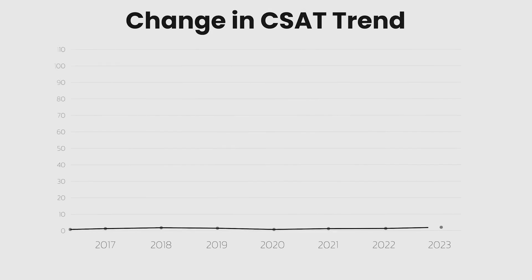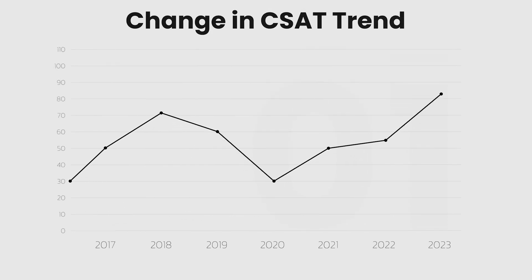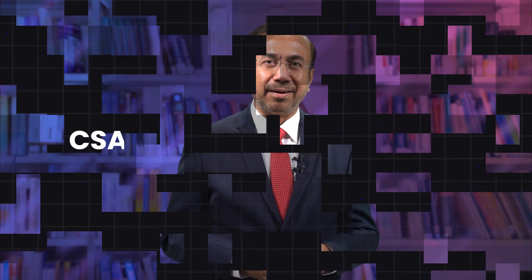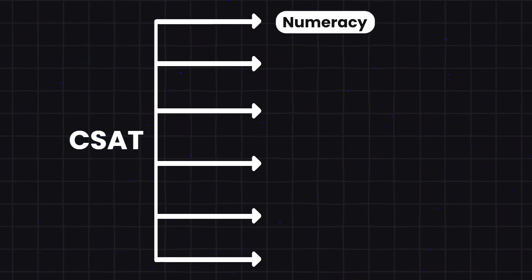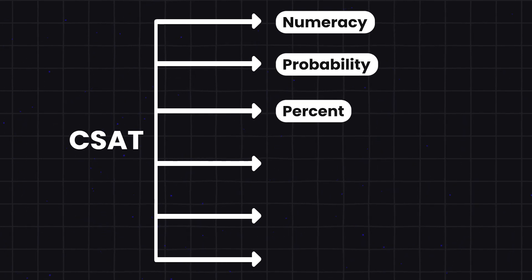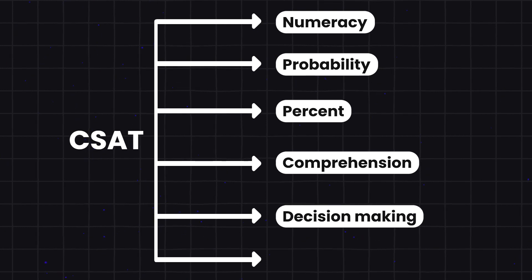Many people understand CSAT as one entity, but it will change. CSAT is a little broad, and there are many things in it. First, your numeracy, probability, percent, comprehension, decision-making and reasoning. CSAT is a very eclectic collection. You should not consider CSAT as one single entity.